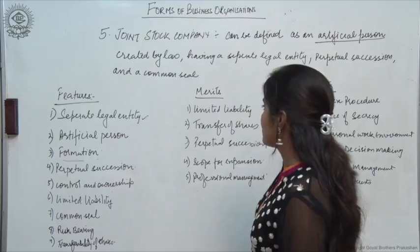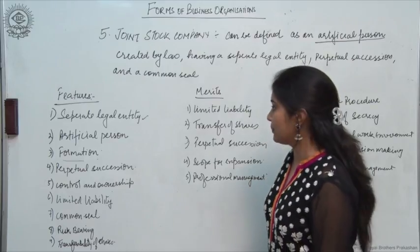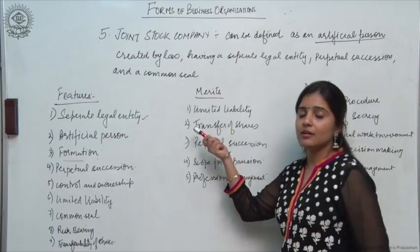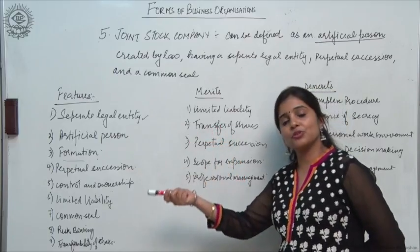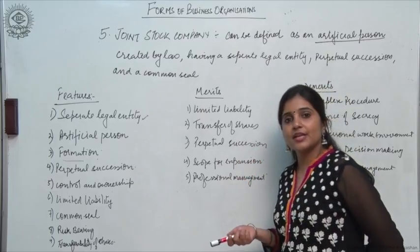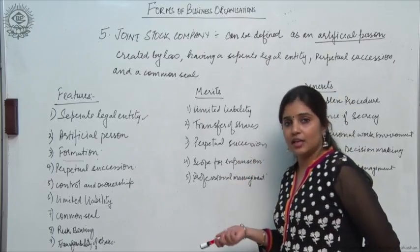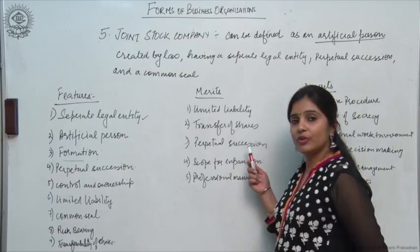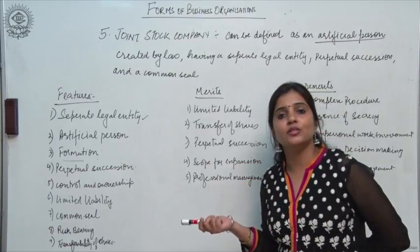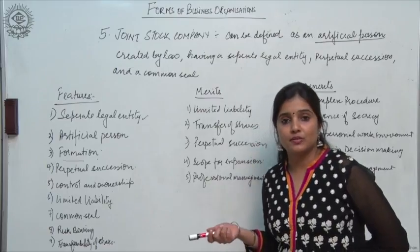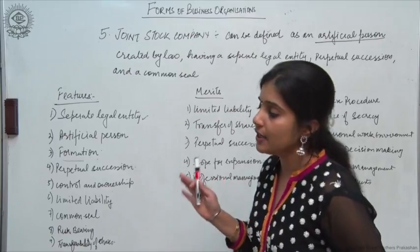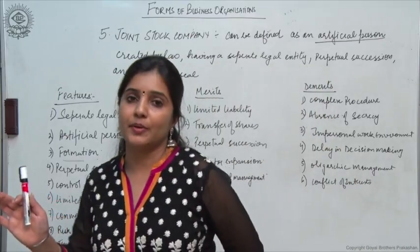Coming to the merits of joint stock company: limited liability is a merit because the liability of members is limited to the amount of capital contributed by them. Transfer of shares — shares can easily be transferred in someone else's name and traded on the stock exchange. Perpetual succession — the death and lunacy of the members, that is the shareholders, will not affect the continuity of the company.